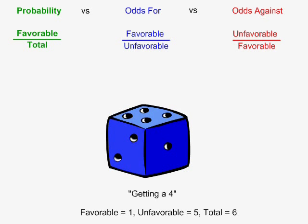What is the difference between probability, odds for, and odds against? Probability is equal to the number of favorable cases over the total number of cases. Odds for is equal to the number of favorable cases over the number of unfavorable cases. Odds against is equal to the number of unfavorable cases over the number of favorable cases.